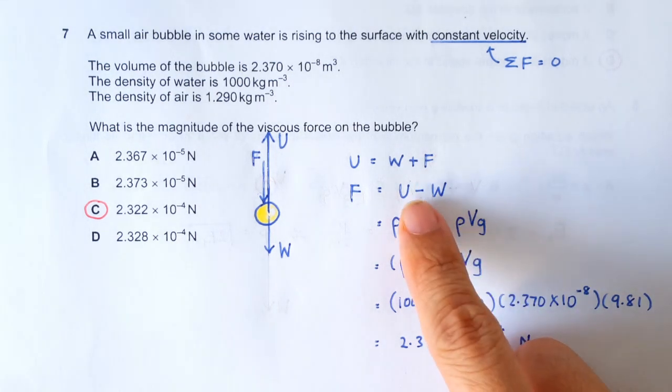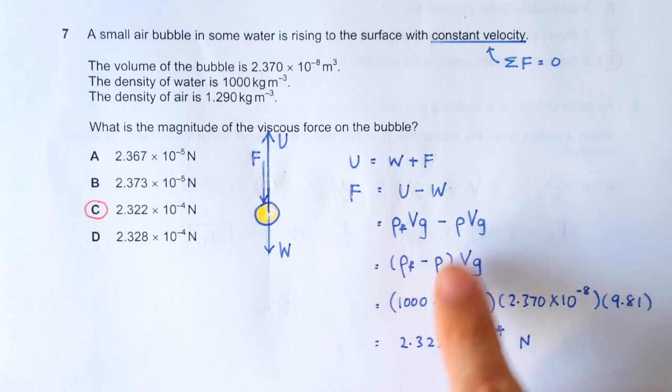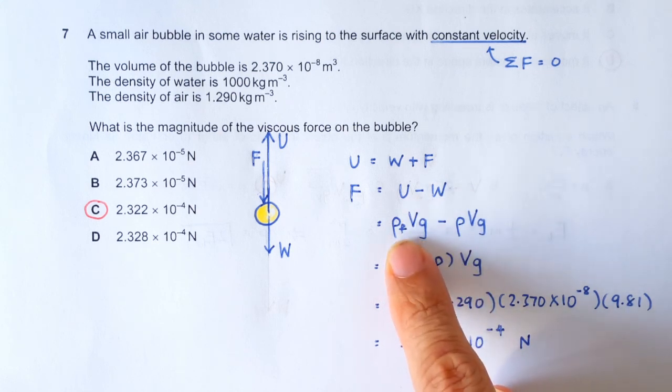So, rearrange the equation. Uptrust is, of course, the weight of the fluid displaced. That's why we are calculating the weight of the fluid. That's why we use the density of the fluid.